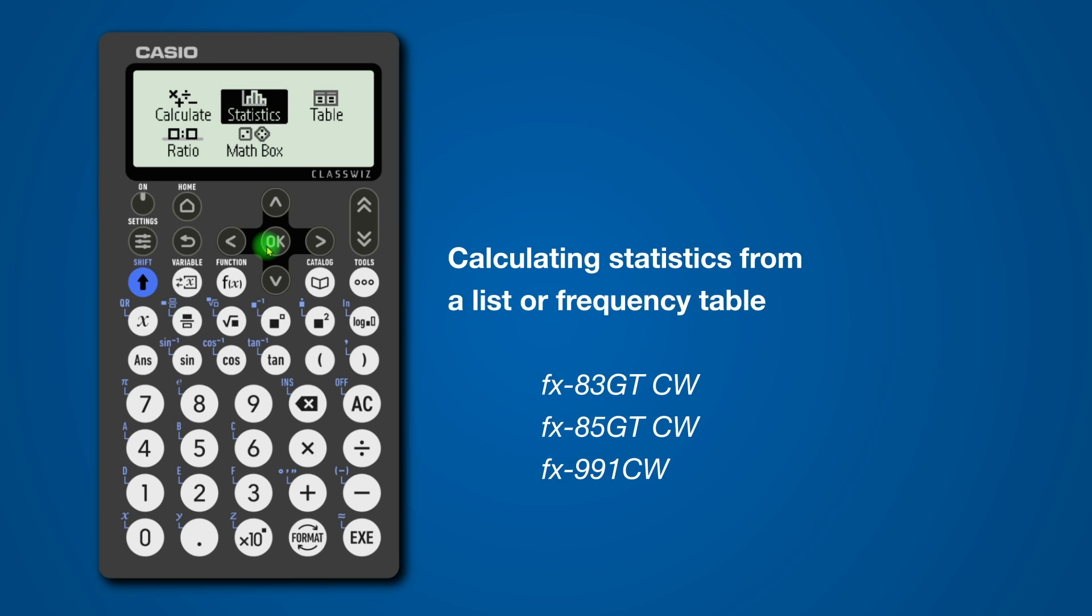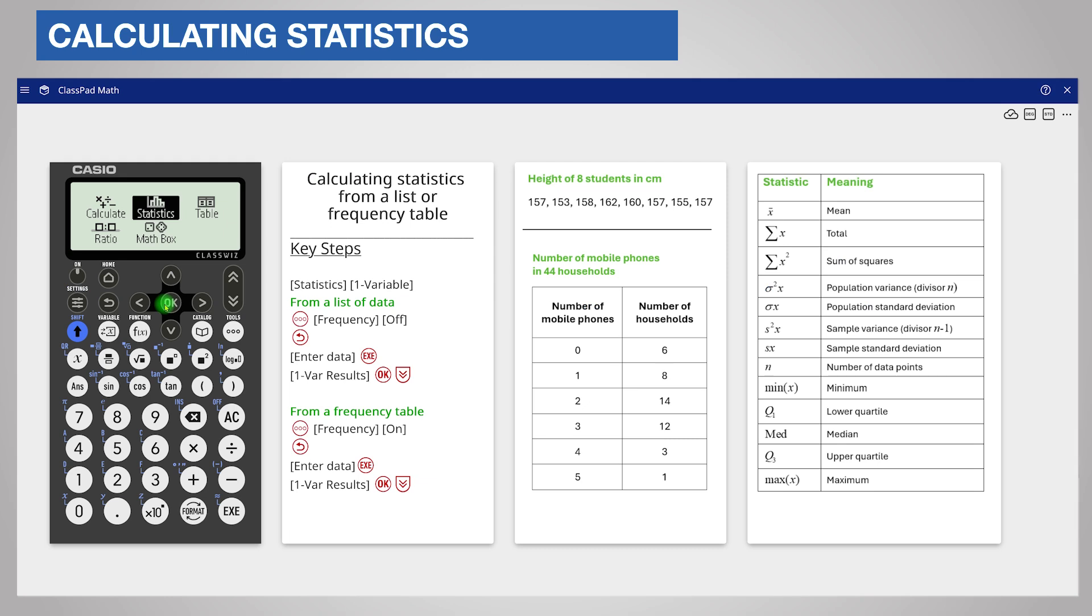This video will help you calculate summary statistics such as mean and quartiles. We will cover calculating statistics from a list and from a frequency table. You will find the key steps on the screen and I will demonstrate them live. From the main menu, choose Statistics and then One Variable.